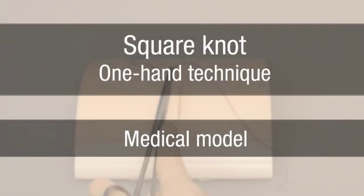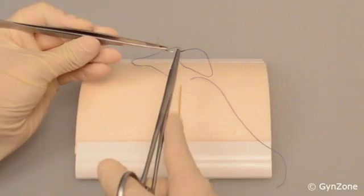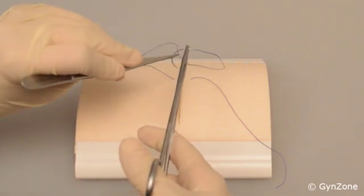Here, the one-hand technique is demonstrated on a medical model with suture materials. Start by turning the tip of the needle towards the shaft of the needle holder and fixing it there.